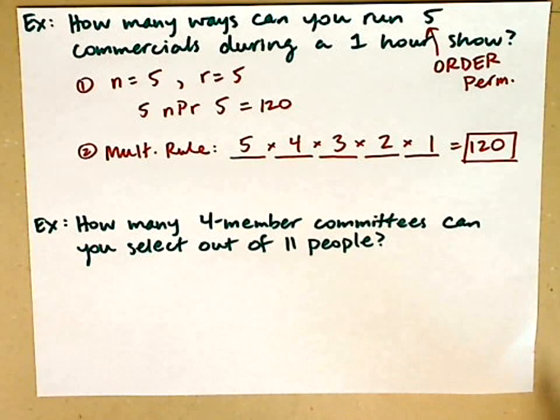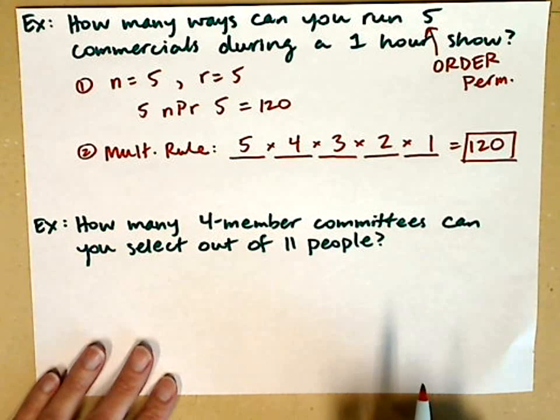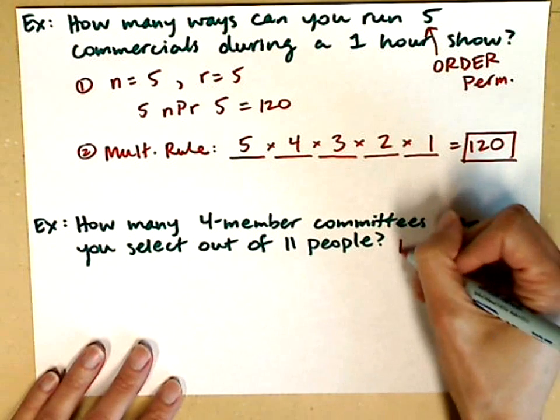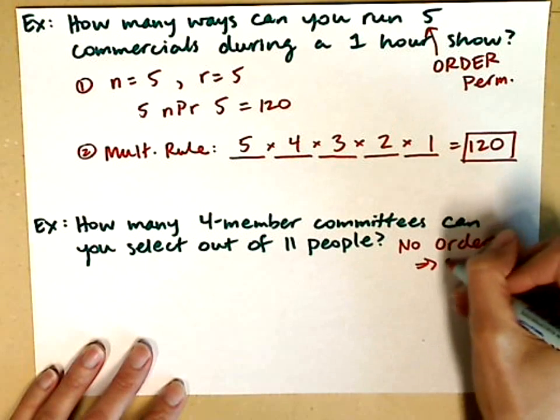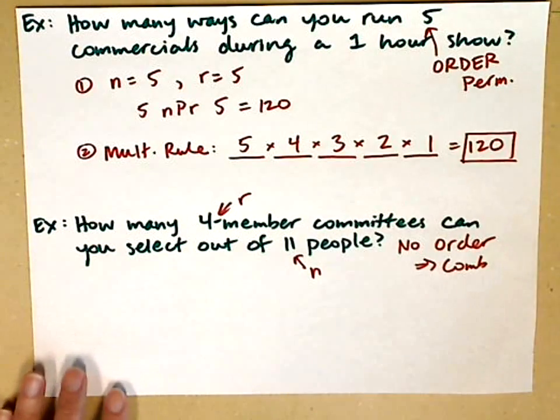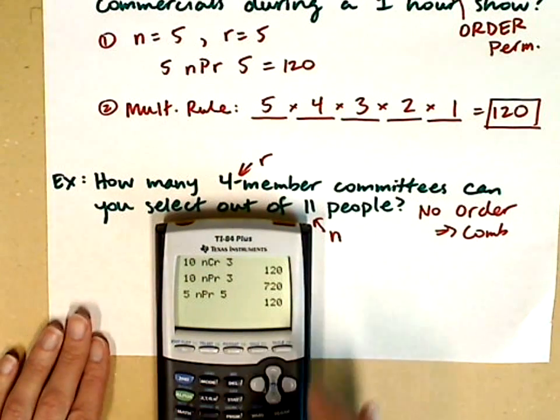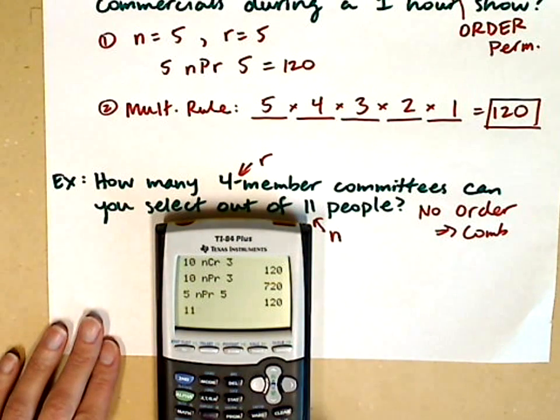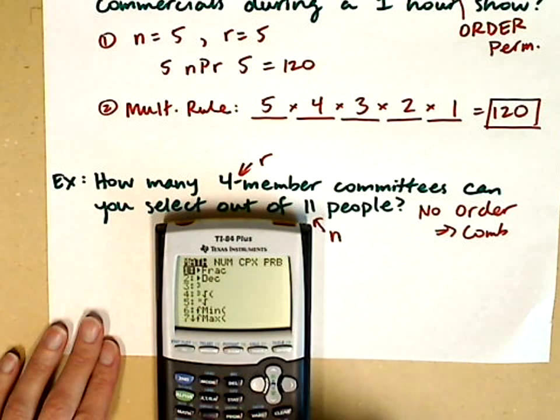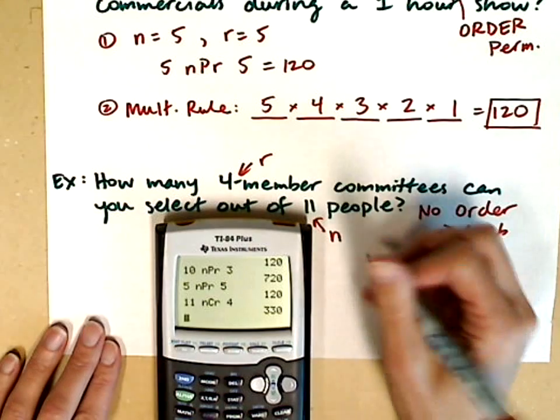One last example. The last example says how many 4 member committees can you select out of 11 people? Here we're just looking for 4 people to fill up a committee. We're not giving them specific positions, so we know that order does not matter. We'll use the combination. N is 11, R is 4. In the calculator, we start with the N value, which is 11. I go to the math menu, arrow over to the probability menu. This is a combination, so I choose number 3. Now I've got 11 nCr. I need that R value, which is 4. So I have 11 choose 4. I hit enter, and our answer is 330.